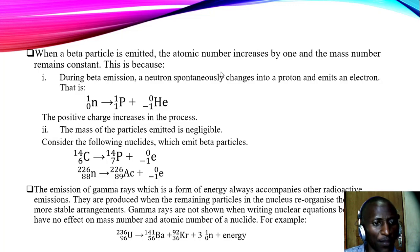Now number 3, the emission of gamma rays, which is a form of energy, always accompanies other radioactive emissions. They are produced when the remaining particles in the nucleus reorganize themselves into more stable arrangements. And it is important to note here that gamma rays are not shown when writing the nuclear equations because they have no effect on the mass number and also they have no effect on the atomic number of a nuclear.